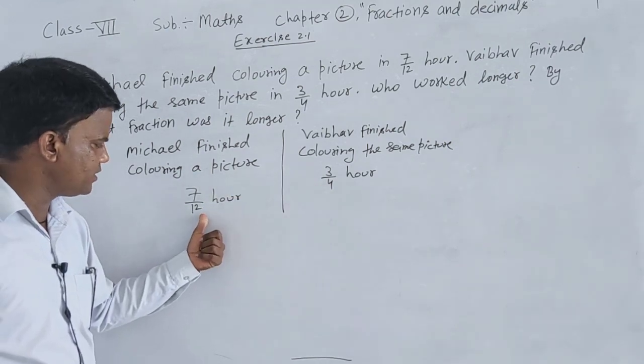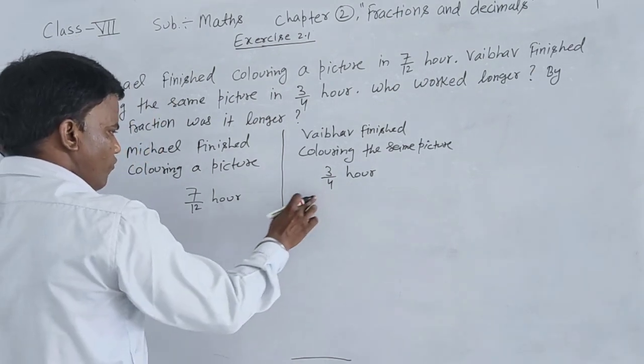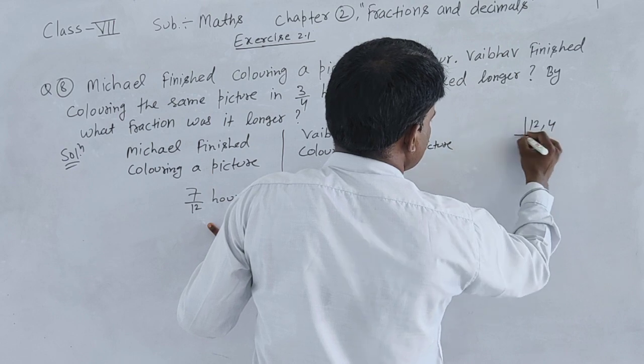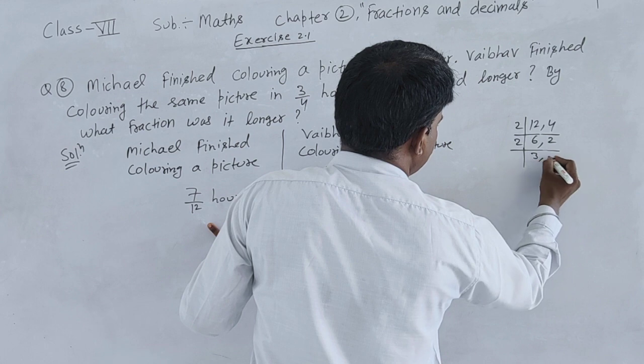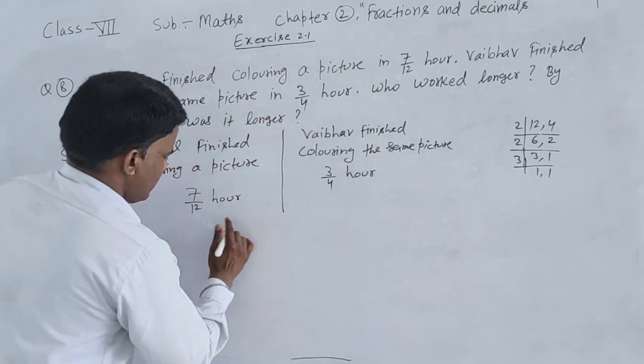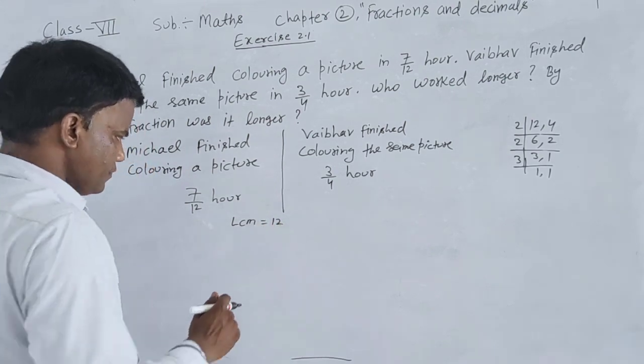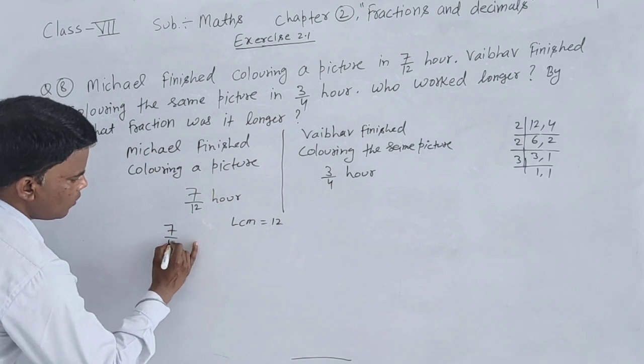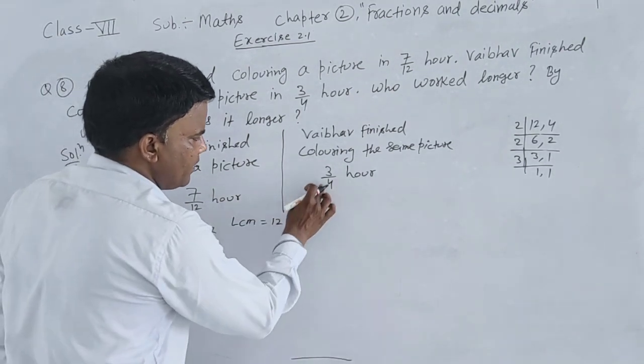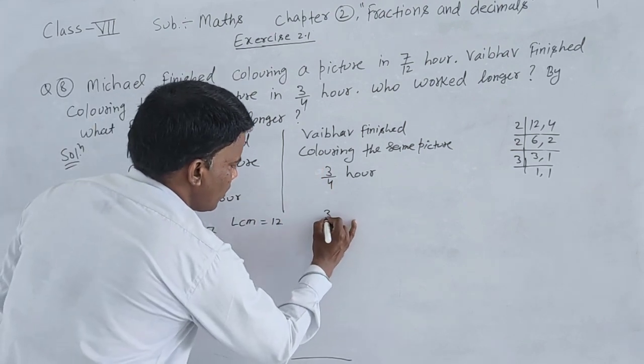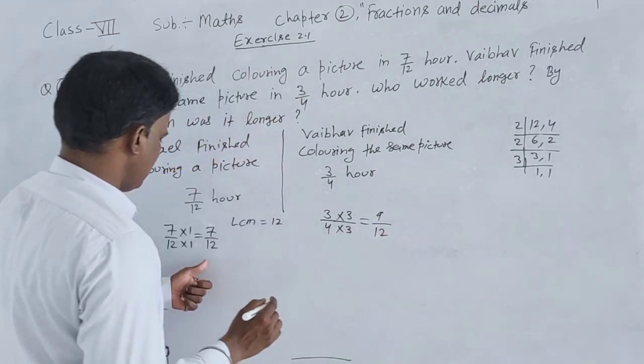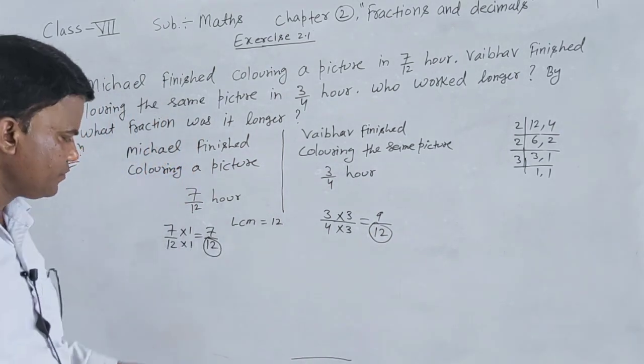The denominators are 12 and 4. Finding LCM of 12 and 4: dividing gives us 12 as the LCM. So 7/12 remains 7/12. For 3/4, we multiply numerator and denominator by 3: 3 times 3 is 9, 4 times 3 is 12, so 3/4 equals 9/12.